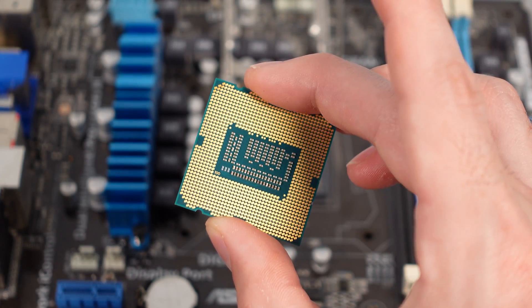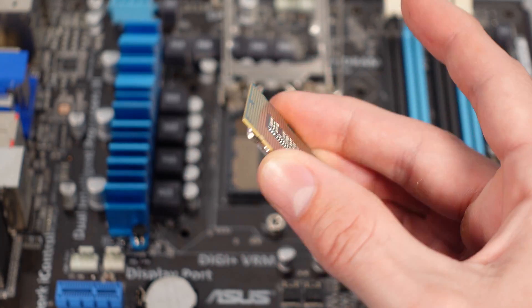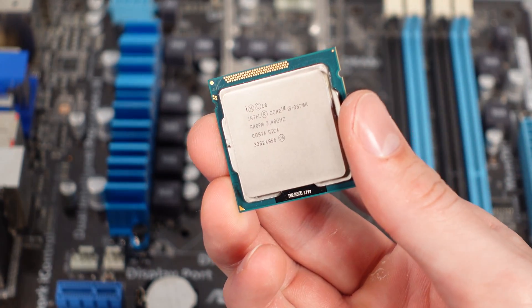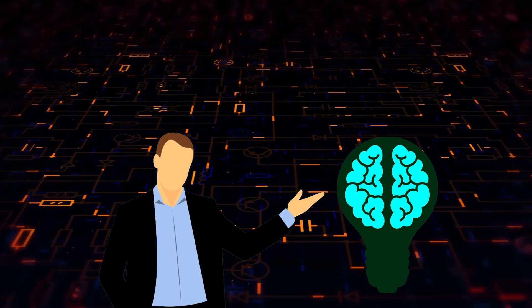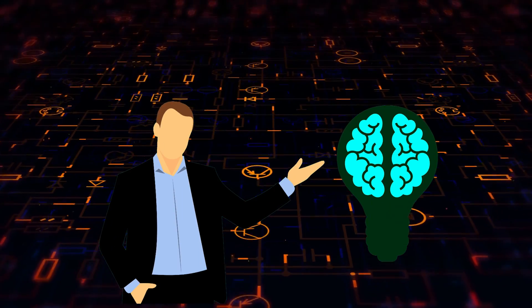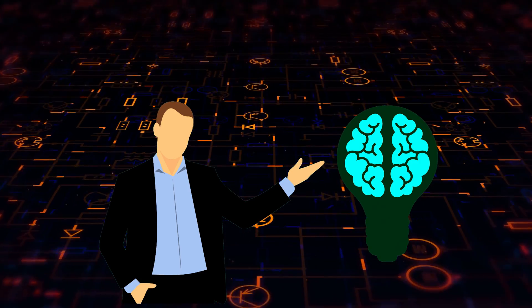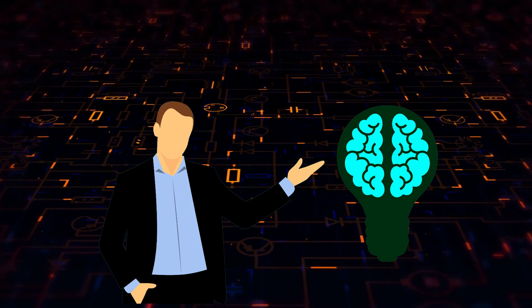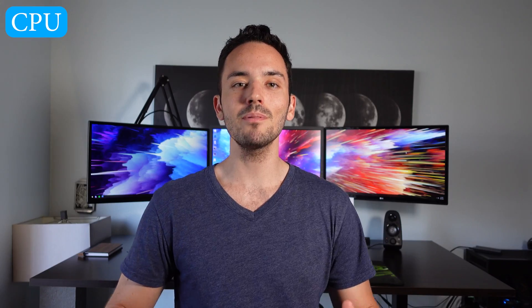Moving on, let's talk about the CPU — and this is probably the fastest one to explain because the most basic explanation is the CPU is what does all the math in your computer, meaning all the calculations. The CPU is what processes most of the stuff in your computer, with the exception of the graphics card which we'll talk about in a bit. The CPU is what is doing all the arithmetic in the computer in order to actually process data.